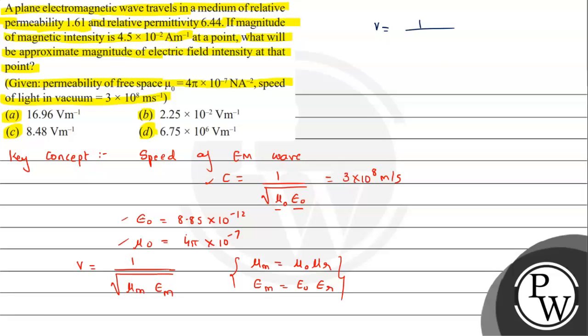So we can write V as 1/√(μₘεₘ) = 1/√(μ₀μᵣ × ε₀εᵣ). That is V.